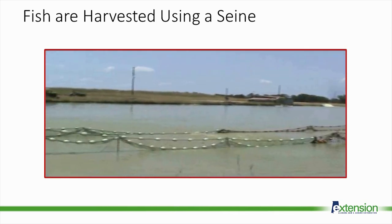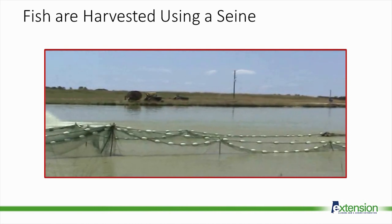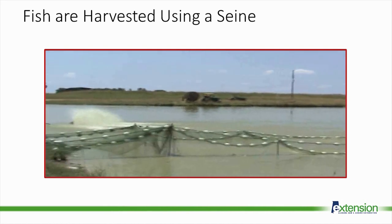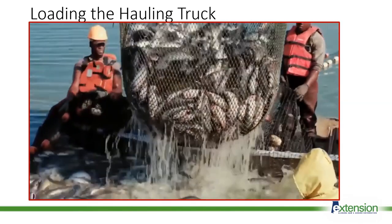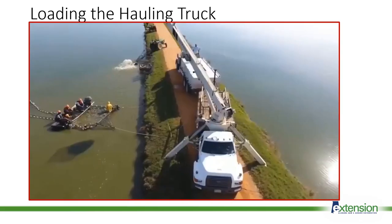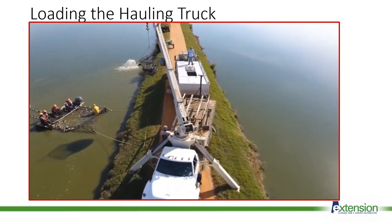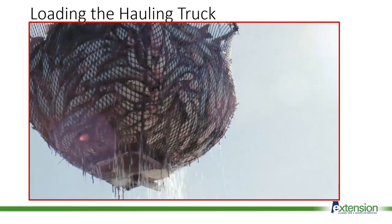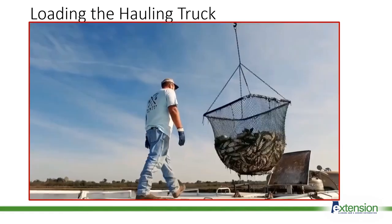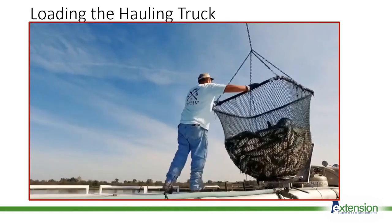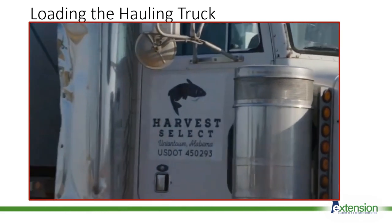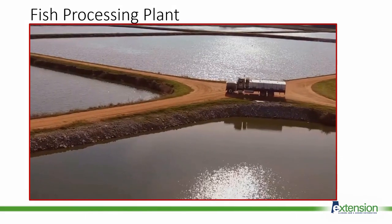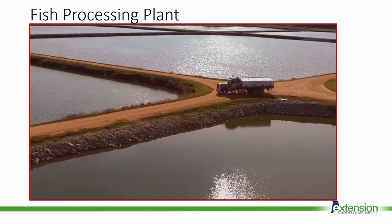The fish are allowed time to settle down and the smaller fish grade out before being loaded onto a truck for transport. Fish are lifted out of the live car and loaded onto a truck using a boom and basket. The fish are weighed with a scale connected to the boom and placed into a tank of water on the truck. The tanks are filled with chilled water and supplied with oxygen to reduce stress on the fish and ensure that they arrive alive at the processing plant.